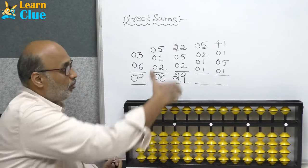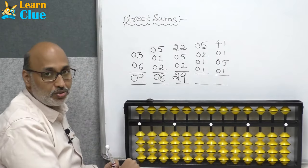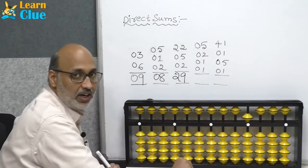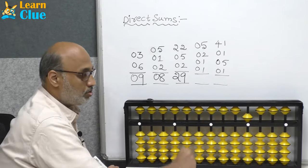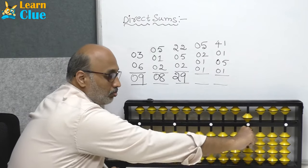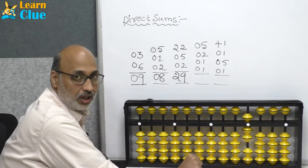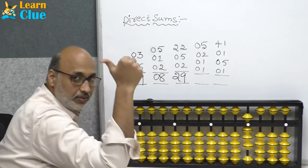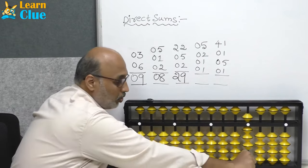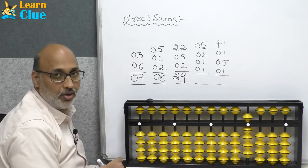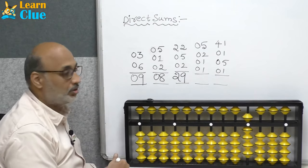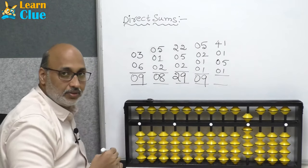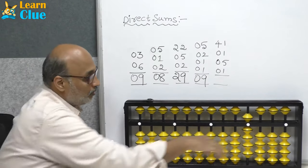We will see one more problem of 4 rows. Plus 5 — move with your index finger. Plus 2 with thumb finger. They are asking plus 1 — thumb finger. Again one more 1. What is the value? It's 9.